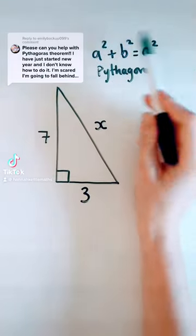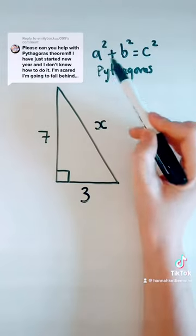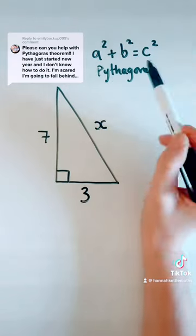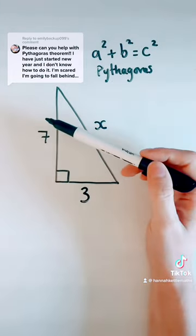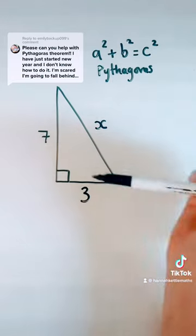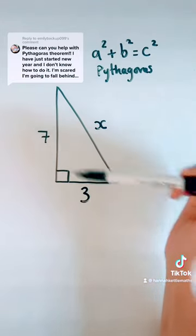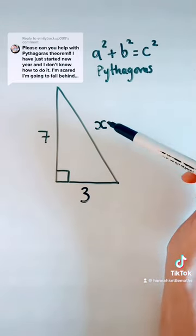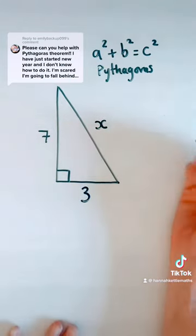If you've learned Pythagoras at school, you've probably seen this theorem: a squared plus b squared equals c squared. All that really means is that if you square this side and you square this side and add them together, you'll get this number squared, and then all we have to do is square root it.